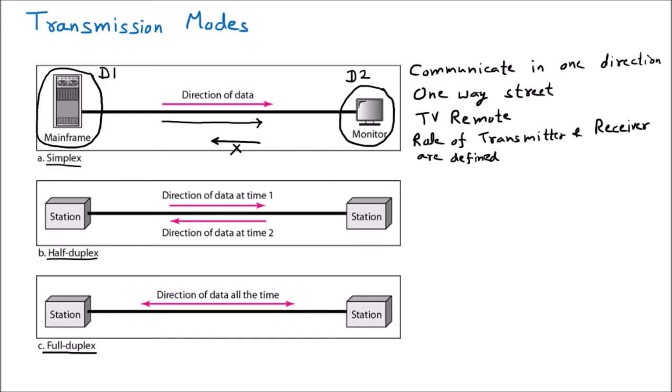The next type of transmission mode is half duplex. Assuming we have two devices — device one (D1) and device two (D2) — half duplex means both can send data, but one at a time. It is like you and I are talking but with a rule: if I am speaking, you will not speak, and if you are speaking, I will not speak. Like in defense movies, one person says their message and says 'over,' signaling the other side can now communicate.